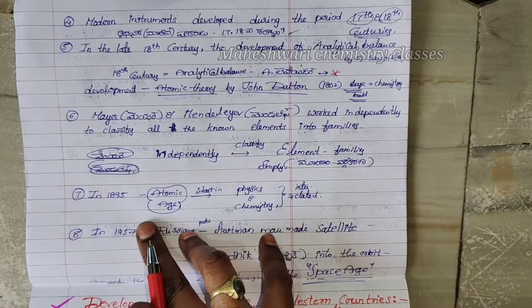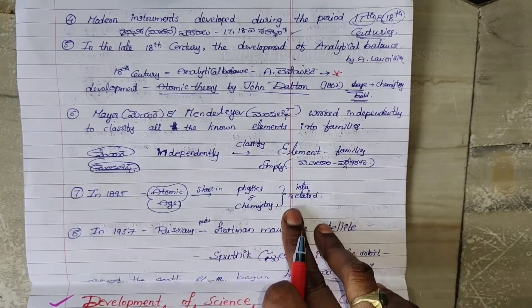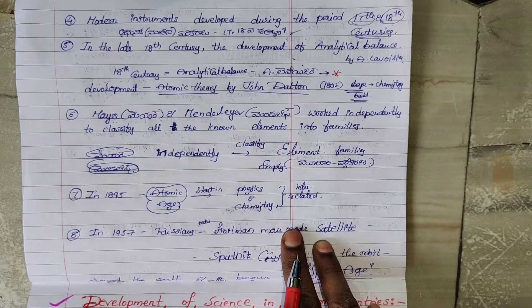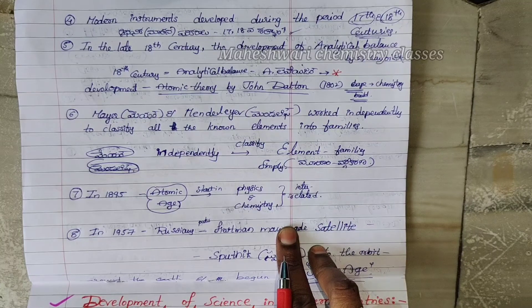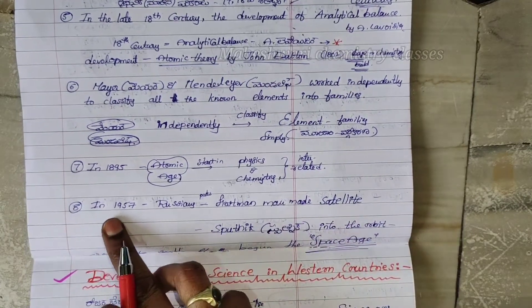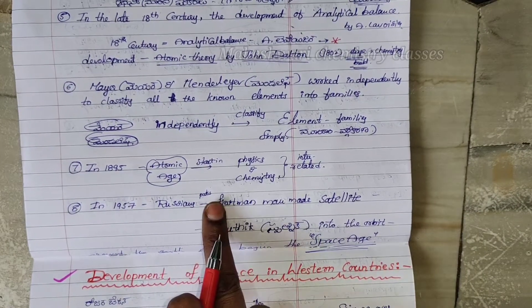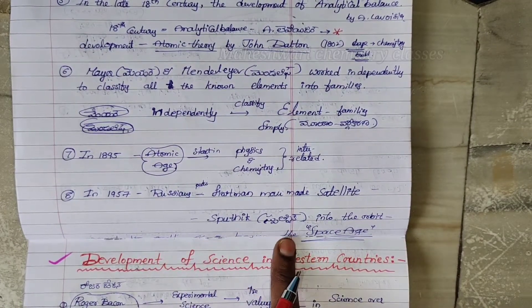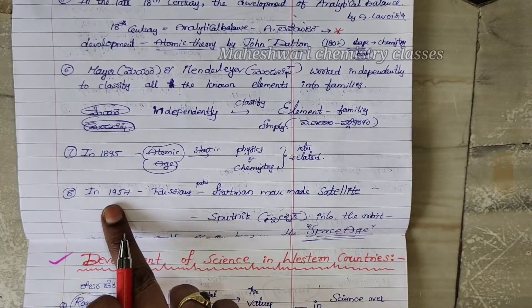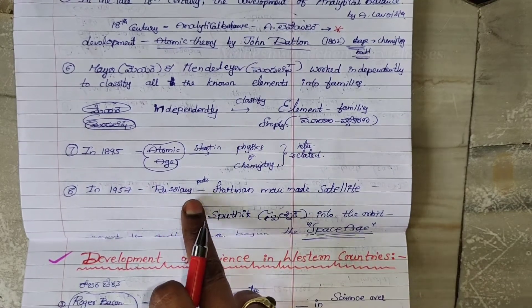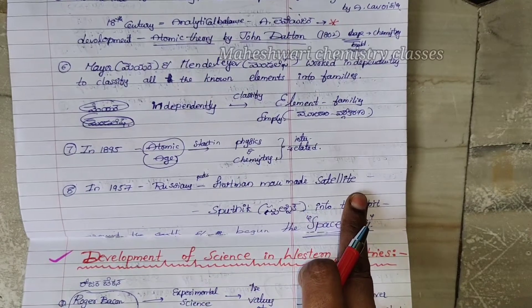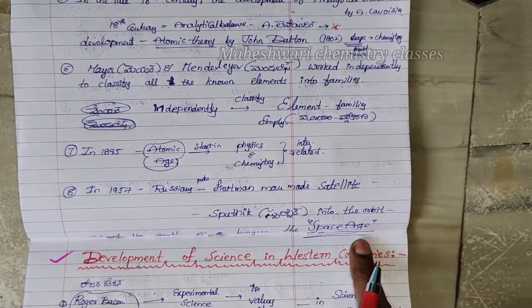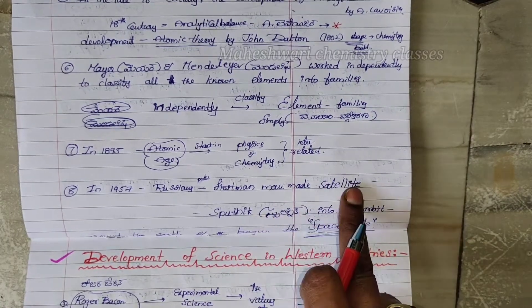Seventh point: In 1895, the atomic age started, with physics and chemistry becoming interrelated. In 1957, Russia put the first man-made satellite, Sputnik, into orbit around the Earth, beginning the space age. Sputnik is the first man-made satellite — Krutrima Upagrah.